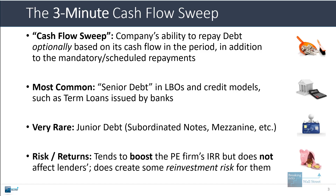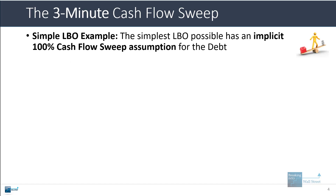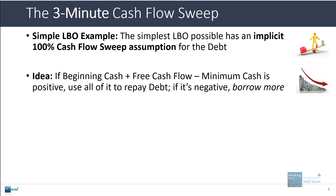In terms of risk and returns, these optional debt repayments tend to boost the private equity firm's IRR, but the cash flow sweep actually does not affect the lender's IRR. It does create some reinvestment risk for them and can affect the money-on-money multiple, but it doesn't change the IRR. In a very simple LBO model, you see cases where the debt schedule has a 100% cash flow sweep implicitly built in, where if beginning cash plus free cash flow minus minimum cash is positive, you use all of it to repay debt, and if negative, you borrow more.